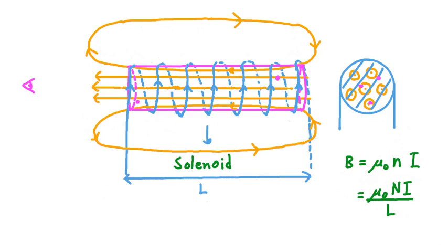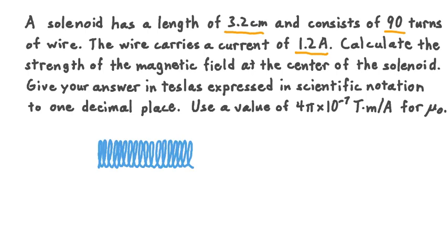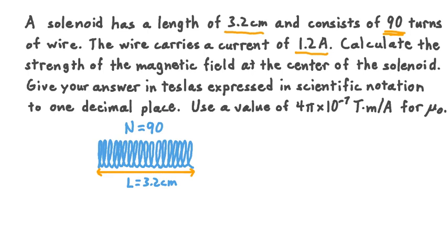Knowing all this, let's get some practice through an example. A solenoid has a length of 3.2 centimeters and consists of 90 turns of wire. The wire carries a current of 1.2 amperes. Calculate the strength of the magnetic field at the center of the solenoid. Give your answer in teslas in scientific notation to one decimal place, using a value of 4π × 10⁻⁷ tesla meters per ampere for mu-naught. So in this exercise we're working with a solenoid with 90 turns — capital N — a length capital L of 3.2 centimeters, and a current I of 1.2 amperes.